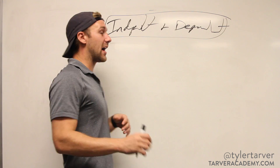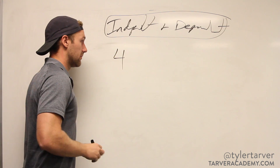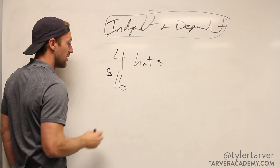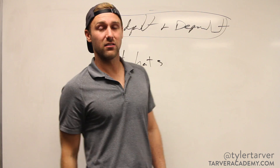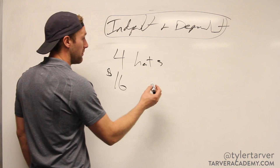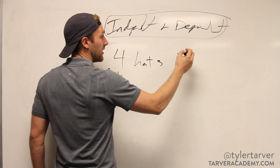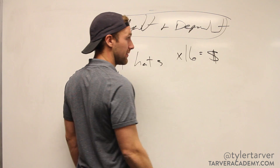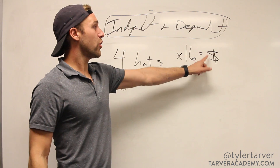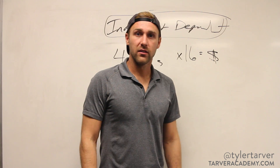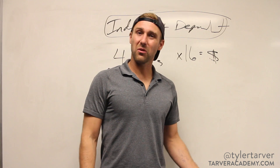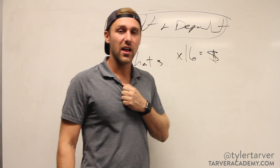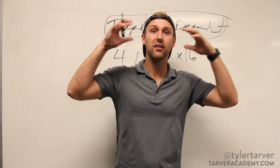Now, what do I control? I don't control the sale going on at Lids, but I do control how many hats I want to buy. Let's say I want to buy four hats at $16 each, and I want to know how much money I'm going to spend. Our equation would be: amount of hats times $16 equals the money spent. Do I control the amount of money I'm going to spend? Not really — it depends on how many hats I want to buy. Lids controls what that total ends up being.